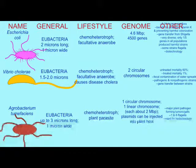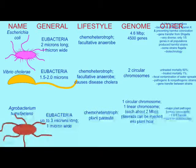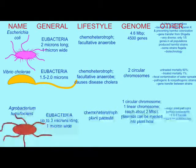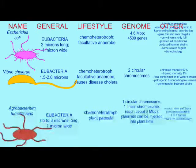Agrobacterium can actually possess one circular chromosome and one linear chromosome, both of which may have around two million base pairs or so, and then a number of plasmids. One of these plasmids can actually be injected into plant cells, which is why Agrobacterium can cause tumorous growth in plant galls and is a serious plant pathogen.